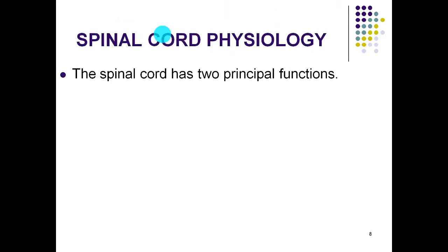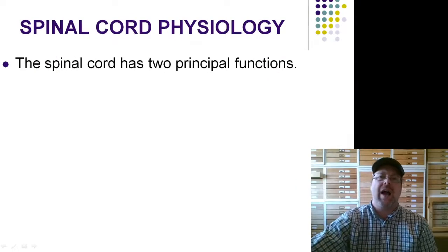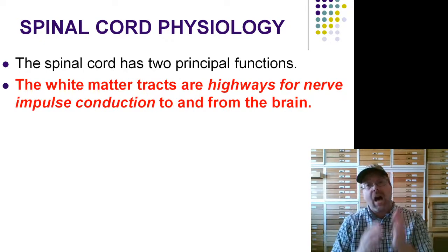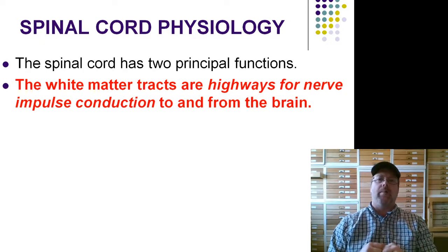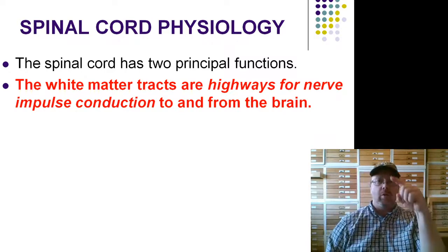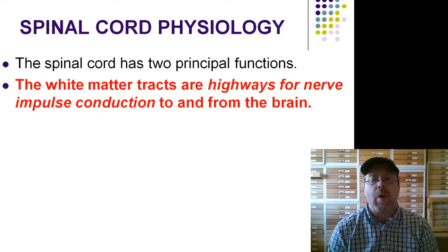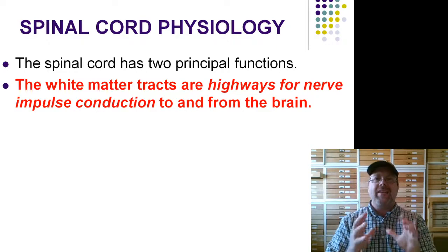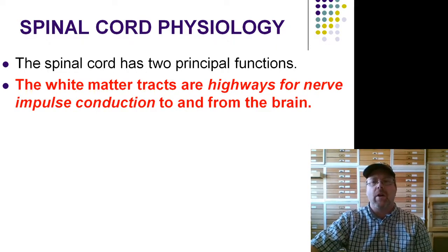Let's talk a little bit about spinal cord function. The spinal cord has two primary functions. The first function is something that we're familiar with — it's the highways. We always think of the spinal cord as being like highways for information to move up and down from our brain to our body and then back from our body to our brain. That is definitely a function of the spinal cord: these highways to move nerve impulses from one place to another.